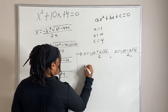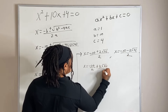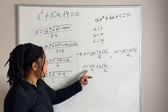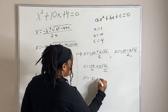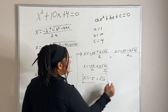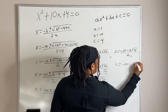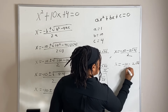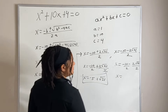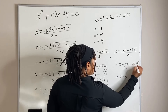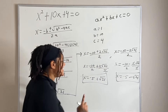Breaking it into two answers: for the first, x equals negative 10 over 2 plus 2 root 21 over 2. Negative 10 over 2 simplifies to negative 5, and the 2's cancel, leaving x equals negative 5 plus root 21. For the second, x equals negative 10 over 2 minus 2 root 21 over 2. Again, negative 10 over 2 is negative 5 and the 2's cancel, giving x equals negative 5 minus root 21. Those are our two final answers.